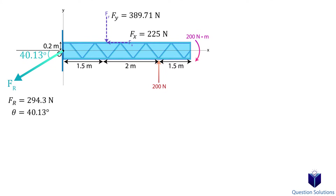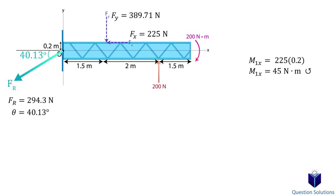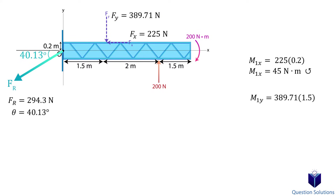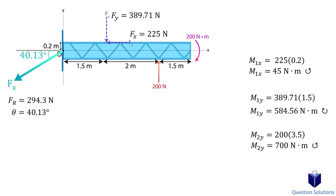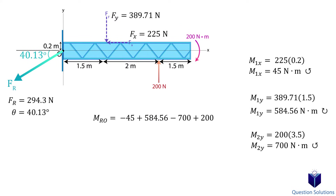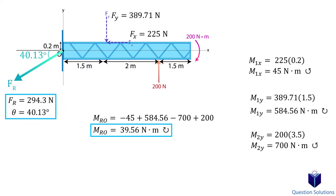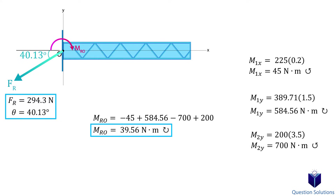Now let's move on to moments. Each component of the forces will create a moment. Looking at the x-components — there is only one force — the perpendicular distance is 0.2 meters, so we multiply the force by the distance; this creates a counterclockwise moment. For the y-components, the first force has a perpendicular distance of 1.5 meters, creating a clockwise moment. The 200-newton force has a perpendicular distance of 3.5 meters, creating a counterclockwise moment. There is one more moment already given to us. We assume clockwise moments to be positive and add it all up, so all counterclockwise moments will be negative. Those are our answers.